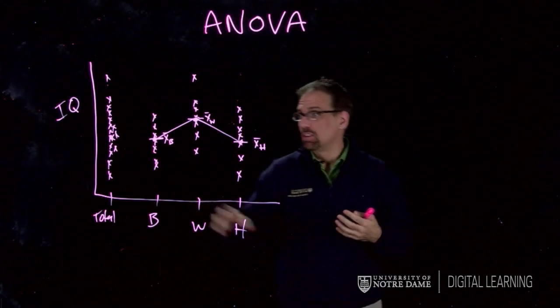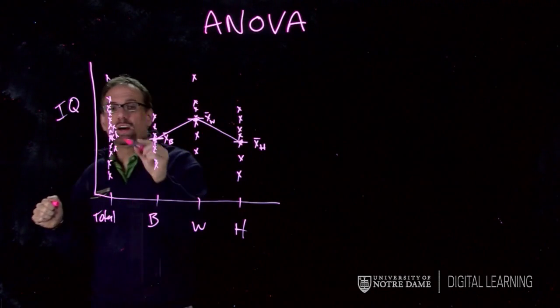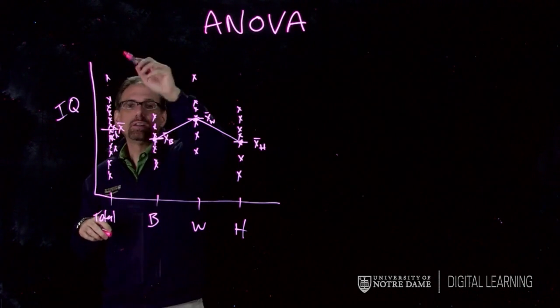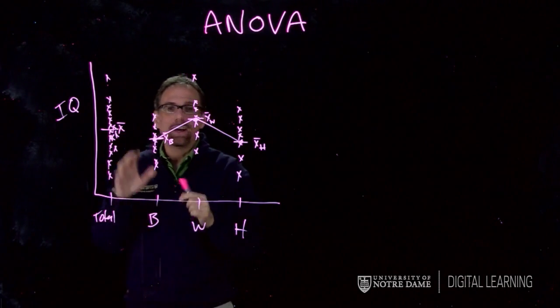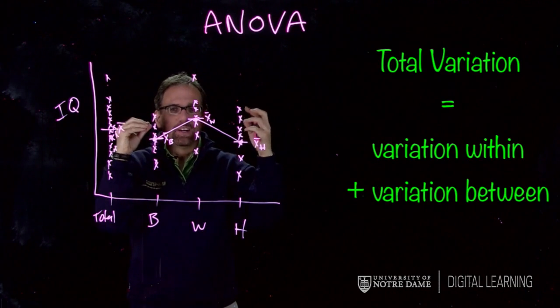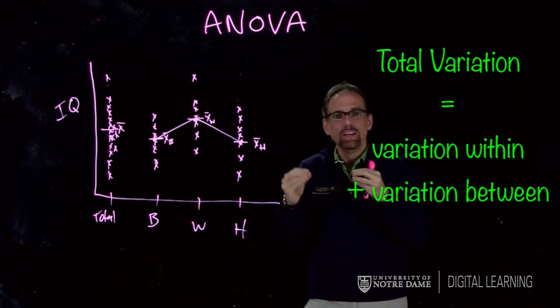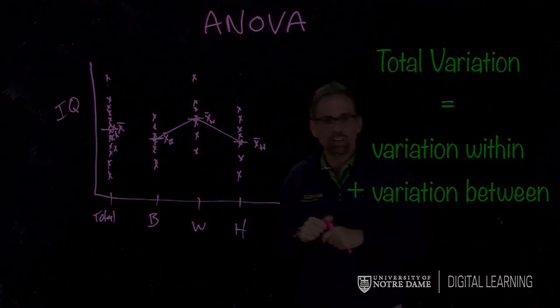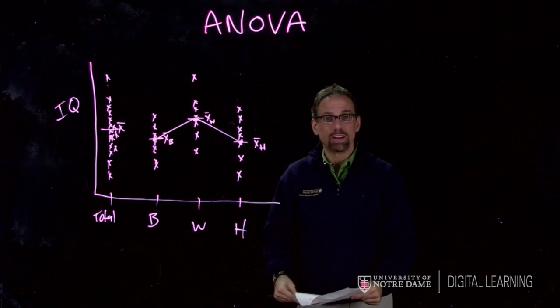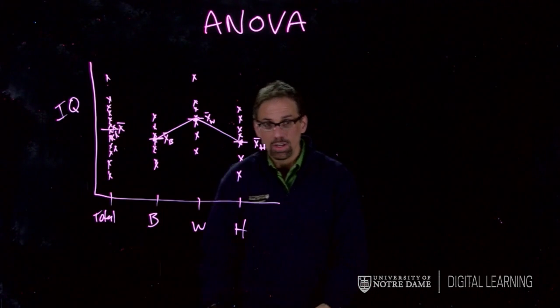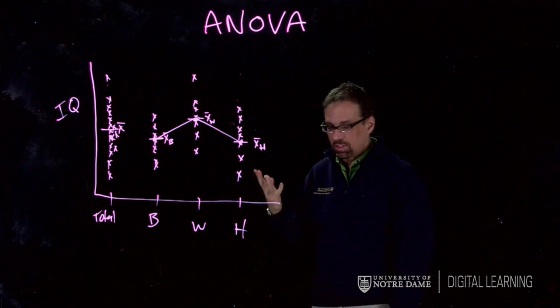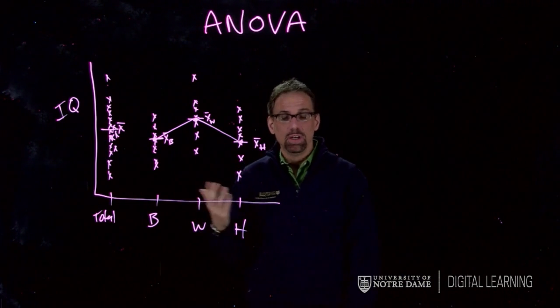The total variation I would have if I calculated the overall mean and calculated all of those differences from the mean would add up to the variation within plus the variation between. Those things added together give me the total variation. That's an important thing to keep in mind. We're going to compare those in the end - that's what ANOVA does. We compare the between with the within.